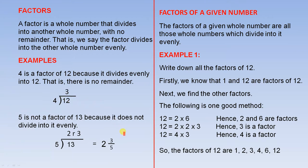5 is not a factor of 13 because it does not divide into it evenly. 5 into 13 goes twice with a remainder of 3. Your teachers will show you how this answer can be expressed as 2 and 3 fifths. And because there's a fraction here, 5 does not divide into 13 evenly, so it's not a factor.